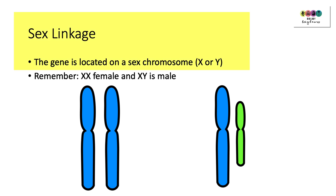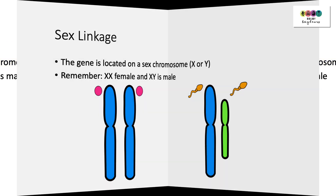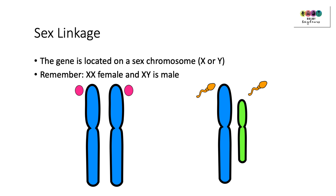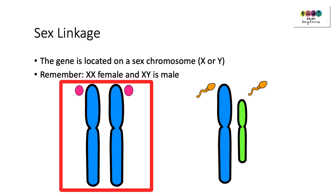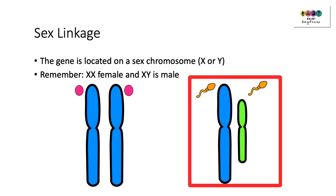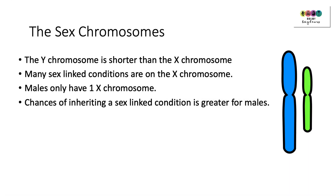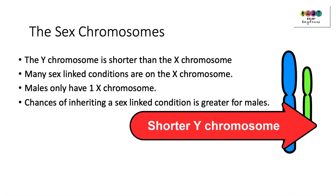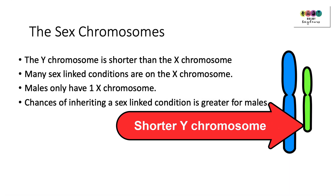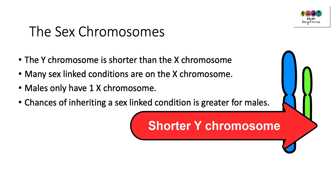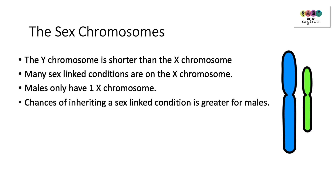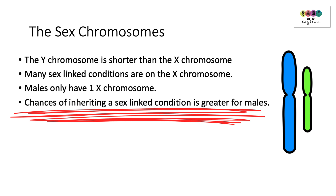Sex linkage is when the gene for a particular condition is located on a sex chromosome — either an X chromosome or a Y chromosome. Females have two X chromosomes and males have an X chromosome and a Y chromosome. It's important to note that the Y chromosome is shorter than the X chromosome. Many sex-linked conditions are associated with a gene only on the X chromosome, and because males only have one X chromosome, the chances of inheriting a sex-linked condition is far greater for males.